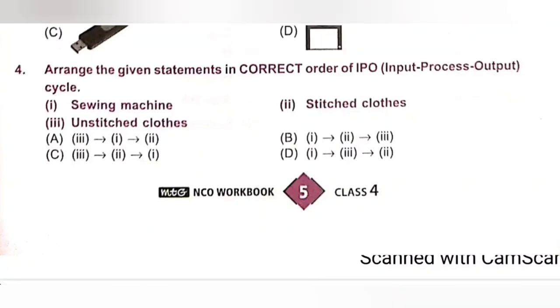So, the input is unstitched cloth, and then process is sewing machine, and then output is stitched cloth. So, option A: 3, 1, 2 is the correct answer.